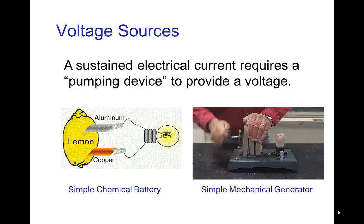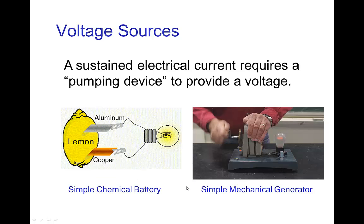Now with batteries, it's a basic chemical reaction. We can have a very simple type of battery where we use the acid in a lemon to have a chemical reaction with a piece of aluminum and a piece of copper. There's a difference between those two, and the resulting voltage forms a simple battery and we produce a current.